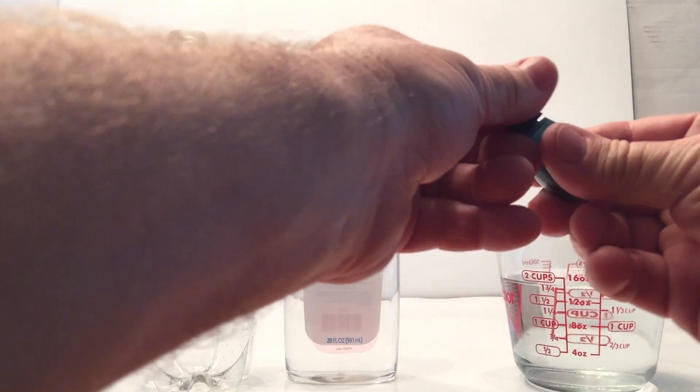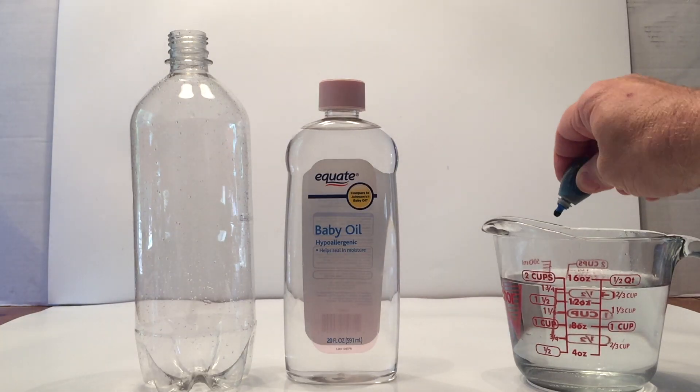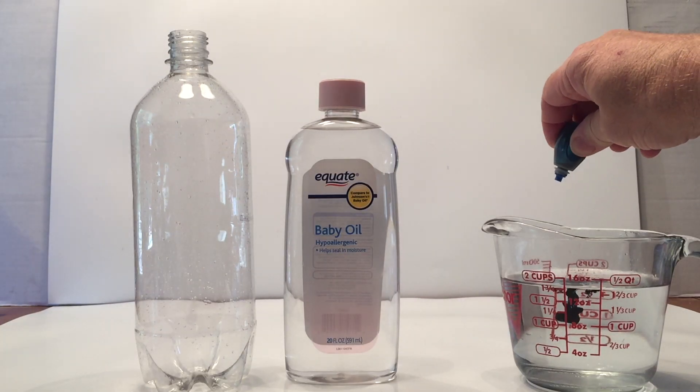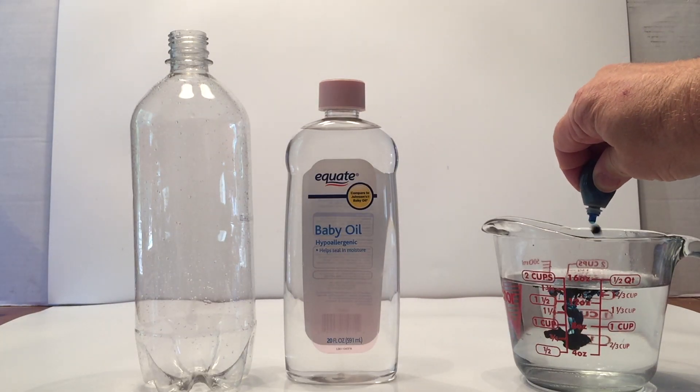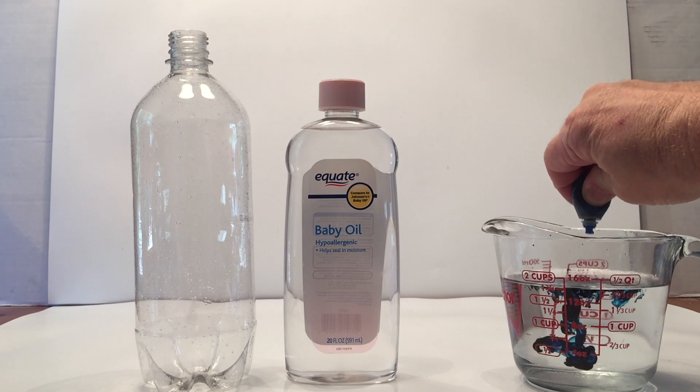Set up the experiment. You're going to take your blue food coloring and put in a number of drops. I put in about seven, I believe. But the more you put in, the darker it'll be.